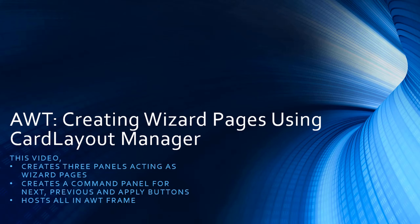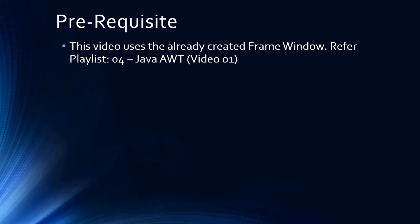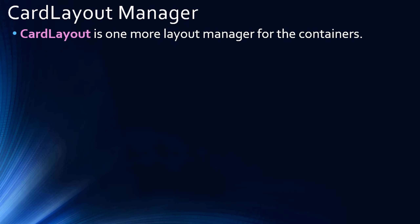Hello friends, in this video we are going to create wizard pages in AWT using the Card Layout Manager. This video creates three panels acting as wizard pages, which then get assembled in one master panel. We also create a command panel for housing the Next, Previous, and Apply buttons, then assemble all panels into an AWT frame window. If you want to know how to create a frame window, you can refer to the very first video in this playlist.